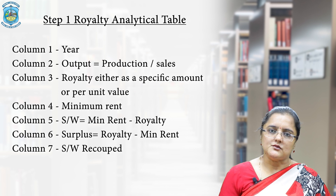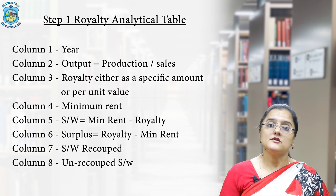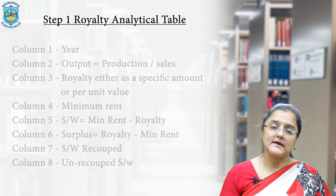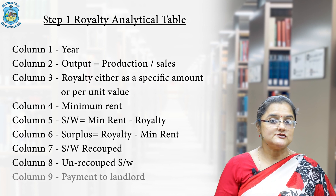Short working recoupment depends on the amount of short working to be recovered — column five — and the surplus available — column six. Column eight, short working unrecouped, is very important for both the lessee and the landlord. It is the amount to be written off from the books — the amount of short working that cannot be recovered because the short working recovery condition has expired. This amount is dropped to P&L.